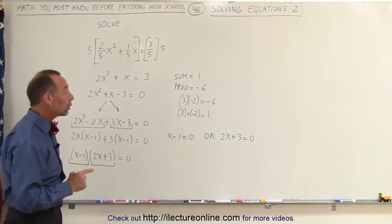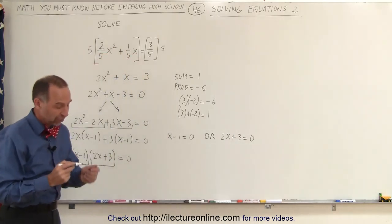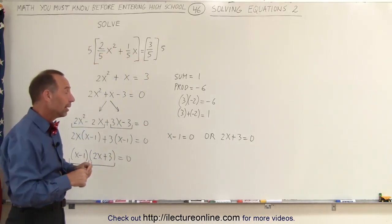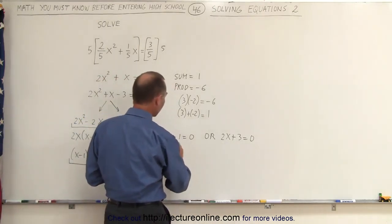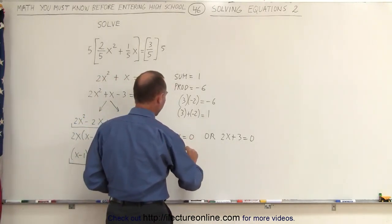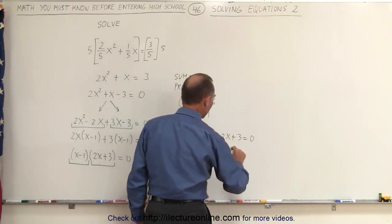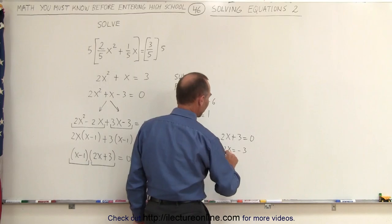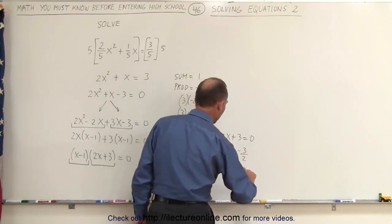If we solve each of those two equations, we'll get the two solutions to our original problem. Since it's a quadratic equation, we typically have as many as two solutions. The first solution is that x = 1. And the second solution is, well, we get 2x = -3, divide both sides by 2, and we get x = -3/2.